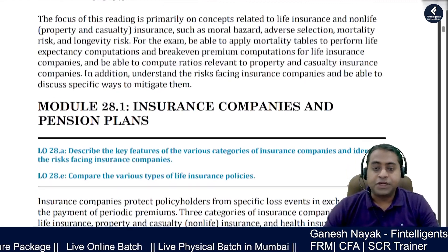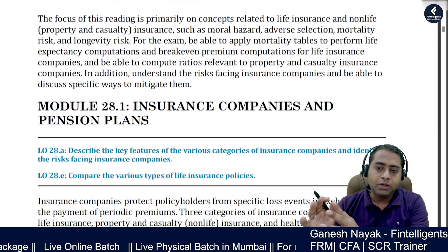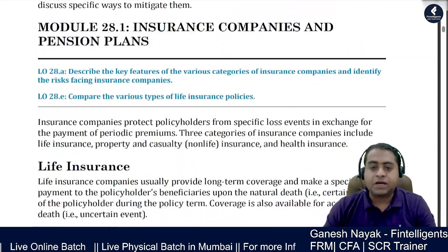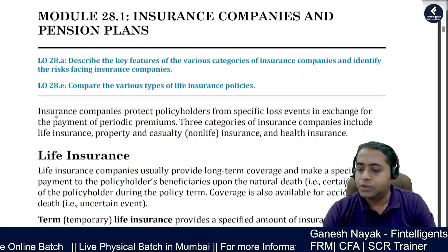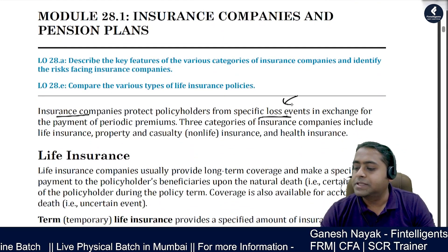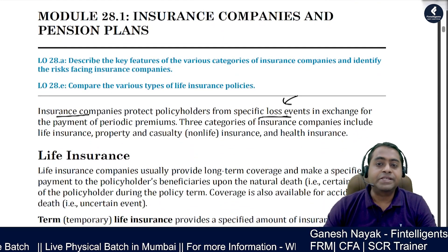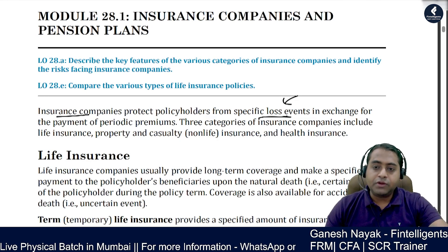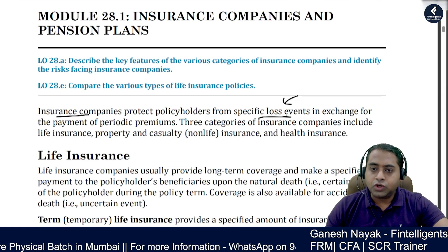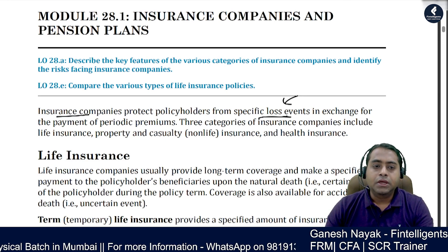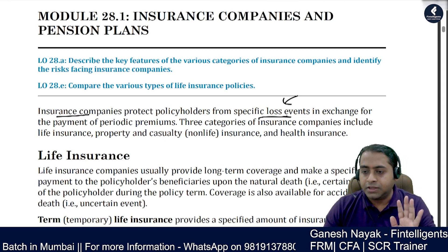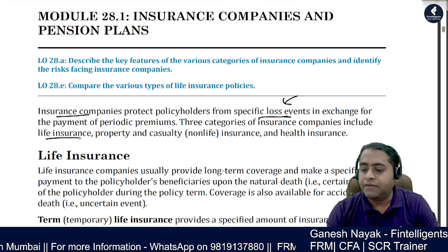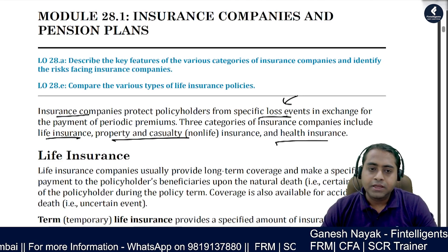Insurance is the first part; the second module is about pension funds. Insurance companies will compensate you if there is a specific loss event that has happened to you — any loss you're facing, insurance companies should compensate you for that. Insurance is bifurcated into three parts: life insurance, property and casualty, and health.